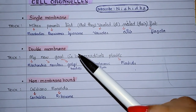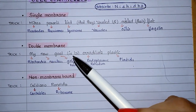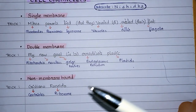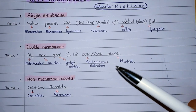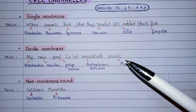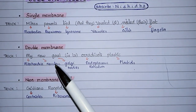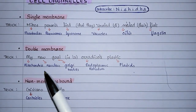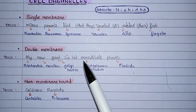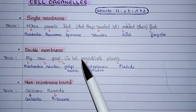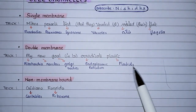Next is double membrane-bound organelles. The trick is: my new goal is to eradicate plastic. Nowadays plastic is getting very harmful for us, so our new goal is to eradicate plastic. Mi for mitochondria, Nu for nucleus, goal for Golgi bodies, eradicate for endoplasmic reticulum, and plastic for plastids.